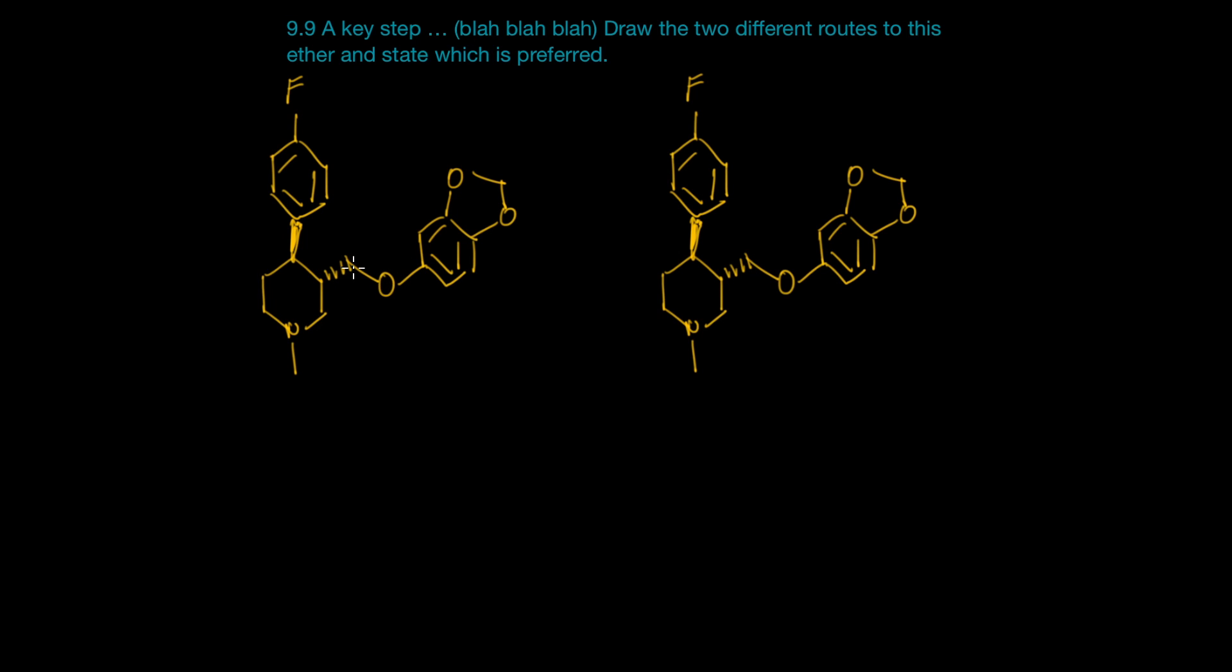In a Williamson ether synthesis, we are creating a carbon-oxygen bond. In the first route, I'm going to discuss how this bond could be made and then in the second route, I'm going to discuss how this bond could be made.